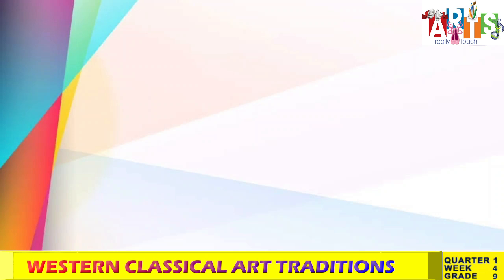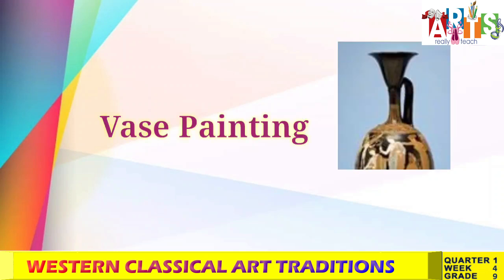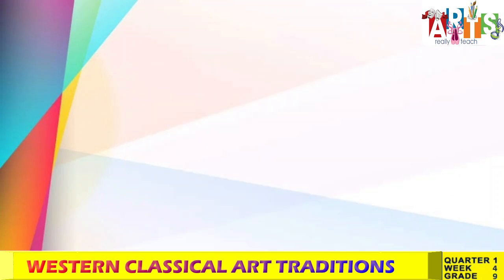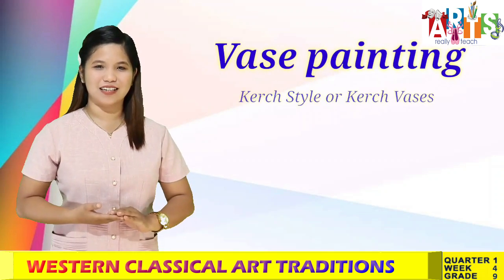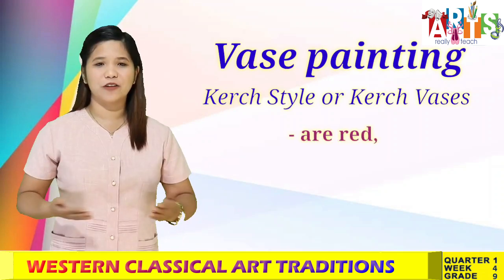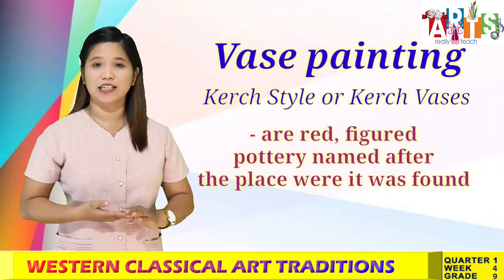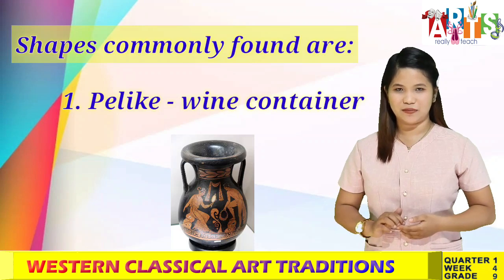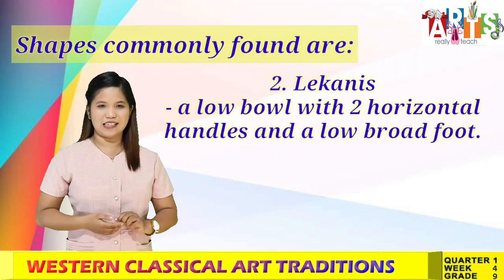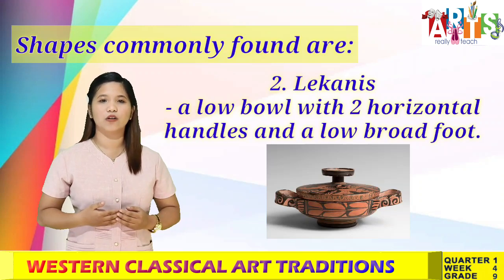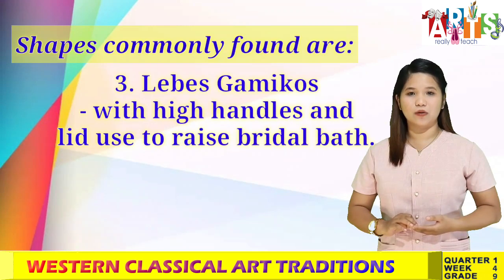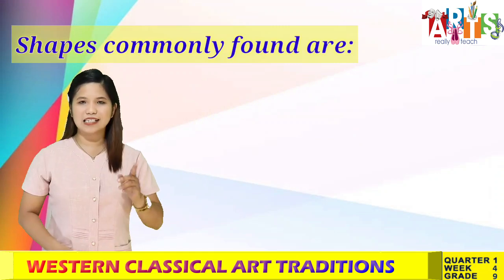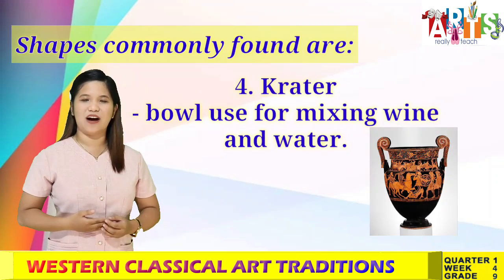Classical painting can be found in vase painting, panel painting, and tomb painting. Vase painting, also known as Corinthian style or referred to as Corinthian vases, is a red-figured pottery named after the place where it was found. Common shapes include: the pelike, or wine container; the lekanis, a low bowl with two horizontal handles and a low broad foot; the loutrophoros, with high handles used to raise bridal bath water; and the crater, a bowl used for mixing wine and water.